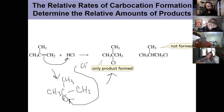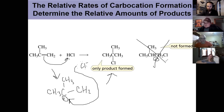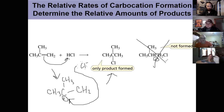Getting the other product would have required a primary carbocation, which is unstable and not formed — so we don't get that product. That's the framework for regioselectivity in this and other reactions in chapter six, and that's what we will continue with in video two of chapter six.